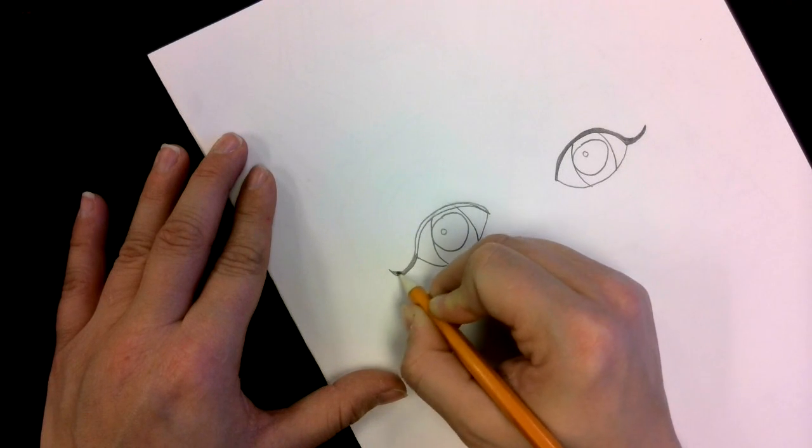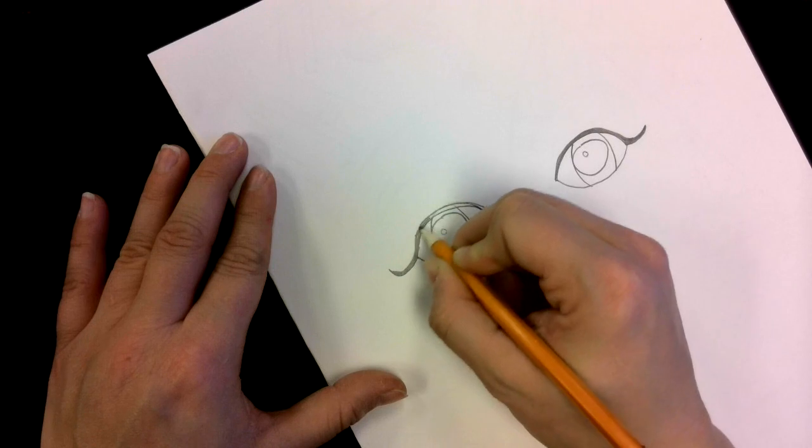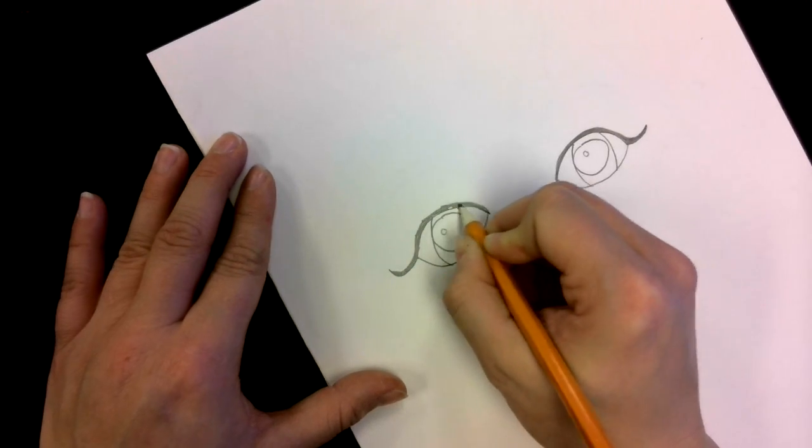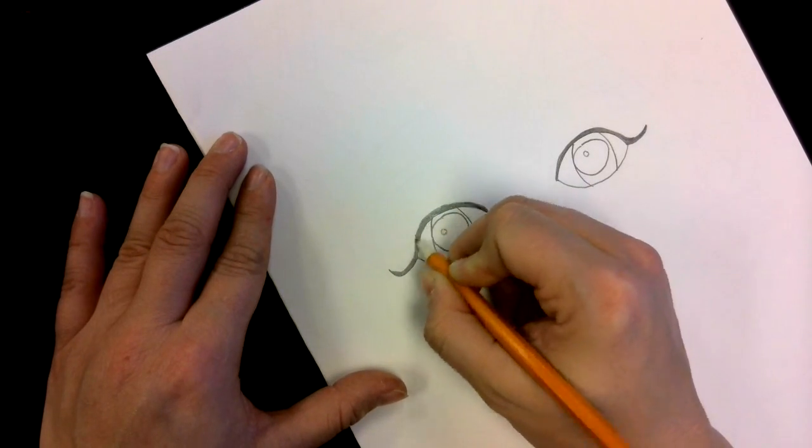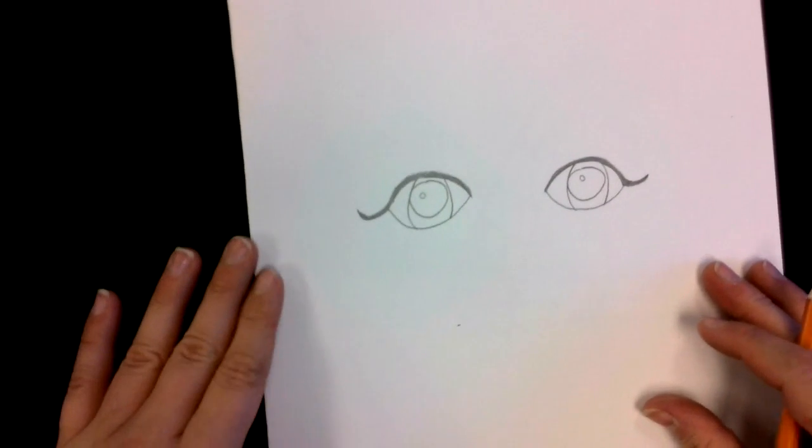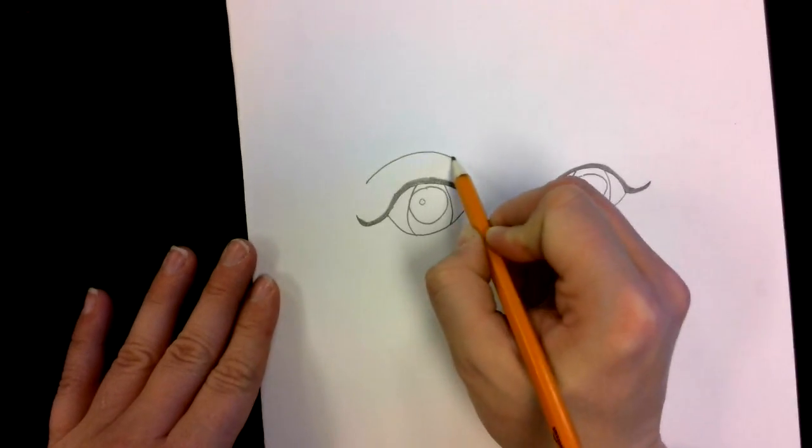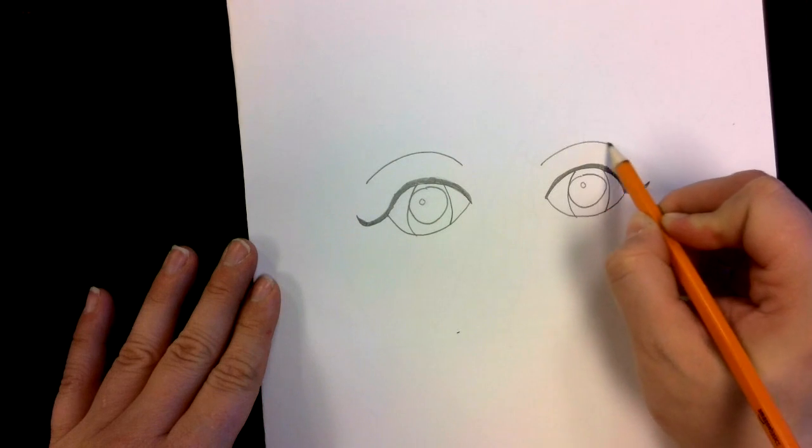I'm just drawing that little curve off of the eyeball and making it a little thicker at the top with my pencil. After I've got my two eyes, above the eyes I'm going to draw two curved lines for my eyebrows.